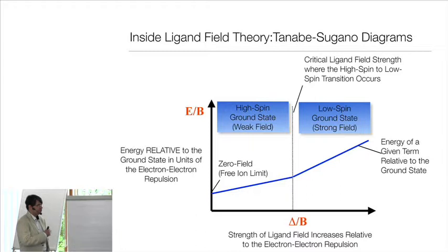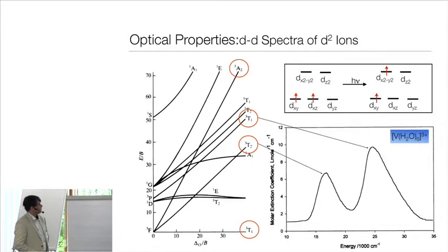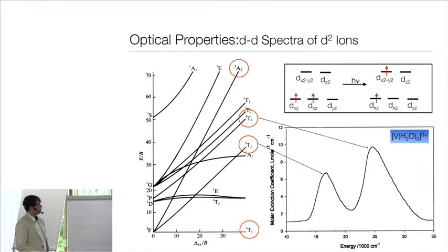The Tanabe-Sugano diagram tells you a lot about the electronic structure of transition metal complexes and should be on everybody's desk — it's your best friend as an inorganic analyst. For a d² system, the free ion has a triplet F ground term, then singlet D, triplet P, singlet G, singlet S, and so on, which evolve into quite a number of molecular terms. Electronic transitions are strongly forbidden unless the states involved have the same total spin.